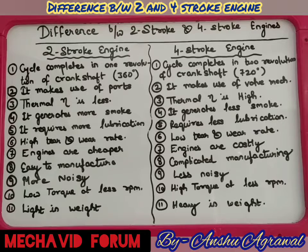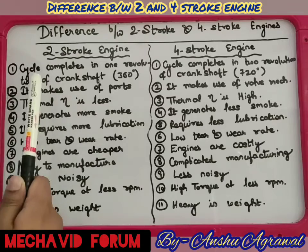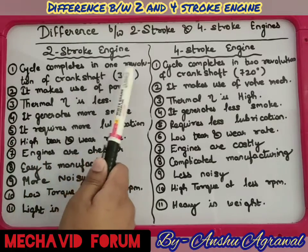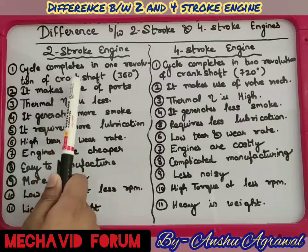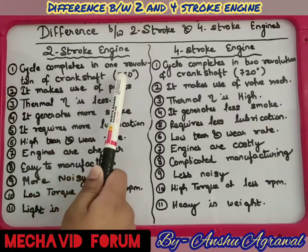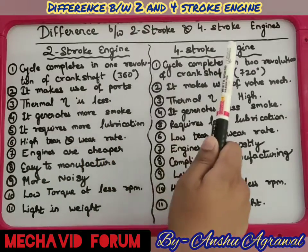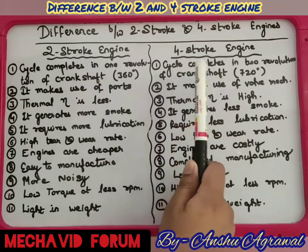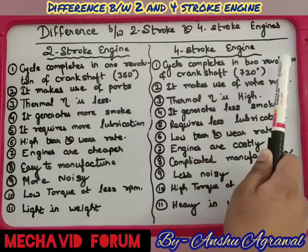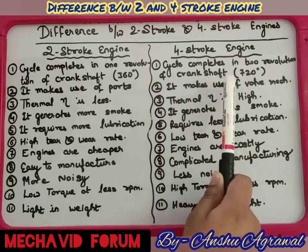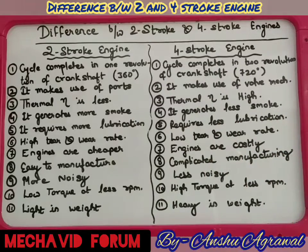Here we have 11 differences between the two-stroke engine and the four-stroke engine. The first one: the cycle completes in one revolution of the crankshaft — 360 degrees — in a two-stroke engine, whereas in the four-stroke engine, the cycle completes in two revolutions, that is 720 degrees.